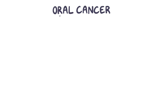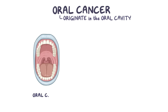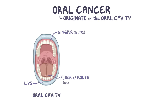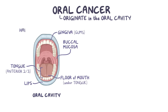Oral cancer describes cancers that originate in the oral cavity. The oral cavity includes the lips, the gingiva or gums, the floor of the mouth, the buccal mucosa which is the soft lining of the inner lips and cheeks, the anterior or front two-thirds of the tongue, the hard palate which is the tough front part of the roof of the mouth, and the retromolar trigone which is the mucosa right behind the last molars on the bottom row of teeth.